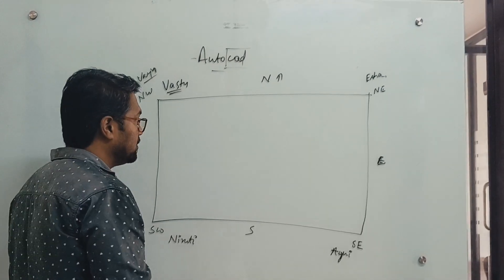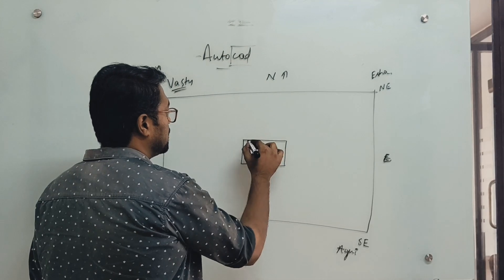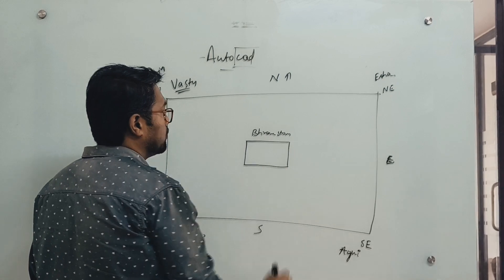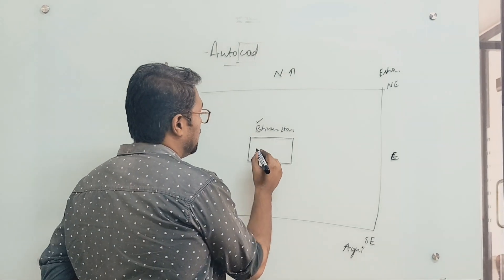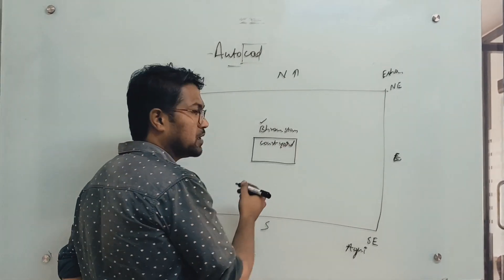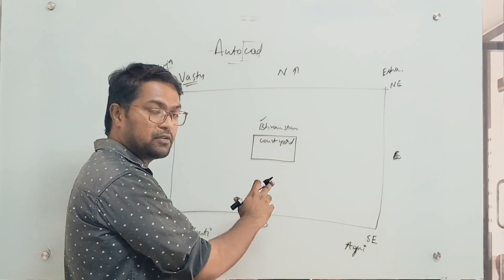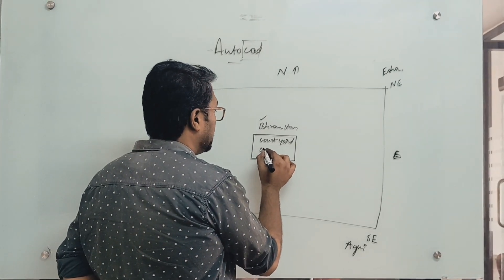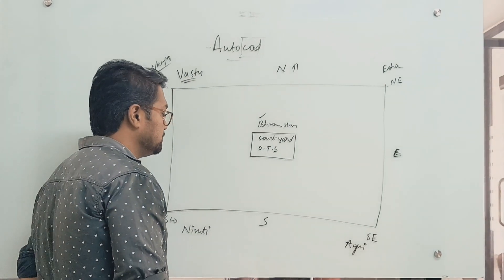One more concept is 'Brahmasthana'. This concept you can see in Kerala — it means giving a courtyard. You can also see it in rows — the complete building has an open space at the center of the building. We call that a courtyard or open-to-sky space.